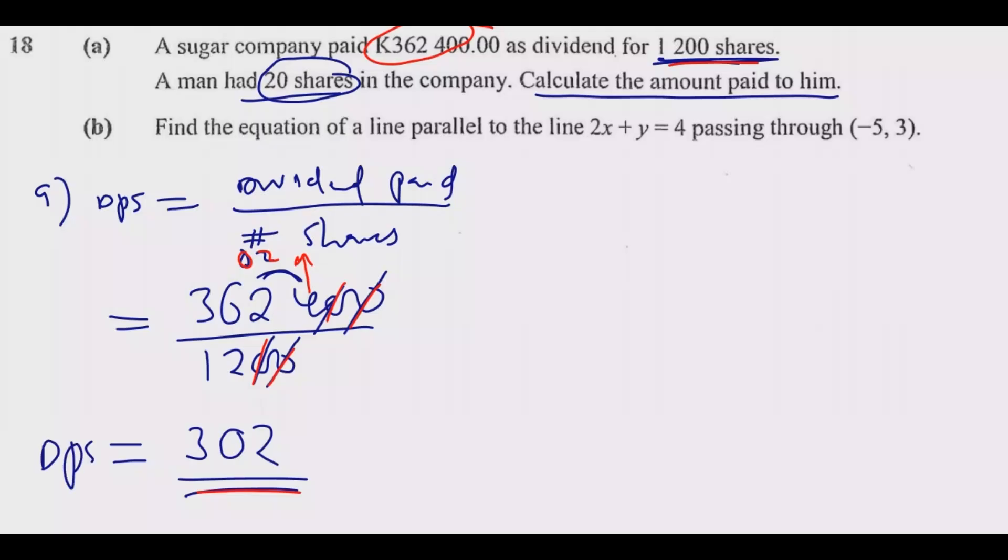This 302 is the dividend paid per share (DPS). For every share, this is what was paid. To find the total amount which was paid, the amount received by the man is equal to how many shares this man had - 20 shares.